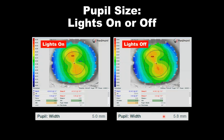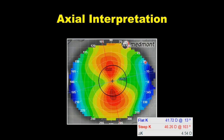One simple thing we often do with presbyopes is perform topography with the lights on to see a more photopic pupil, and with the lights off to see a more scotopic pupil. This gives us an understanding of how much shift occurs in pupil size — and therefore what we might worry about related to the optics of our contact lens.